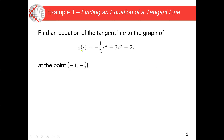Let's see the second example. We have g(x) equal to negative one-half x to the power of 4, plus 3x cubed, minus 2x. The question asks us to find the equation of the tangent line to the graph of this function at the point (−1, −3/2). Since g(x) is a polynomial, we need to find the tangent line — the straight line that crosses the curve at that point.